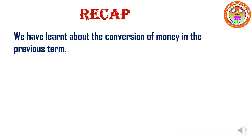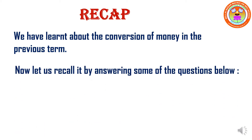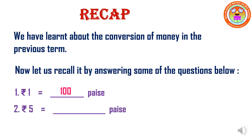Children, we have learnt about the conversion of money in the previous term. Now, let us recall it by answering some of the questions below. We know that 1 rupee is equal to 100 paise. For example, if we are given 5 rupees and we are asked to convert it into paise, we have to multiply 5 with 100. Because 1 rupee is equal to 100 paise, so 5 rupees will be equal to 5 into 100, that is equal to 500 paise.